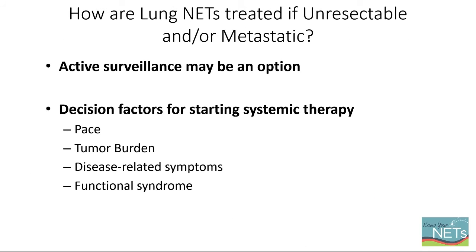What if lung NETs are unresectable and metastatic? Active surveillance may be an option — meaning meeting with the physician on a routine basis and also performing imaging. The decision factors we use to start systemic therapy include: the pace of the disease, the tumor burden, where the tumor is located, whether a patient has disease-related symptoms, and whether there is evidence of a functional syndrome like carcinoid syndrome where treatment is necessary. Of course, this is a shared decision with the patient.